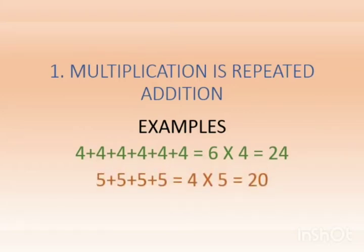Let us see one more example. In the second example we have added 5 four times. So the easy way to find out the multiplication or the addition of this is 4 multiplied by 5, which gives us 20.